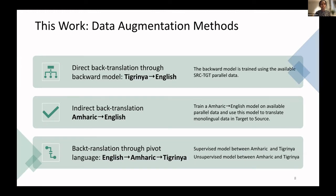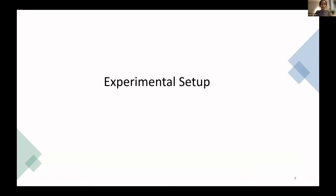The third back translation approach uses a pivot language. Since Amharic and Tigrinya are related languages, a supervised model between Amharic and Tigrinya was created, and since Amharic is a higher resource language, a better model between Amharic and English was also created. We have two ways of training between Amharic and Tigrinya: a supervised model using available parallel sentences, and an unsupervised model making use of the larger monolingual data available in both languages.